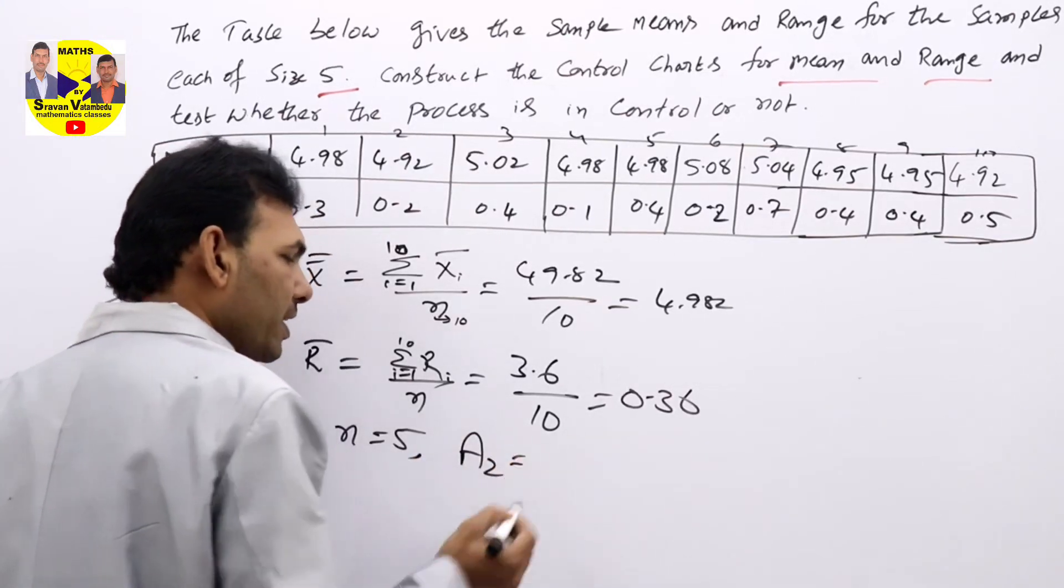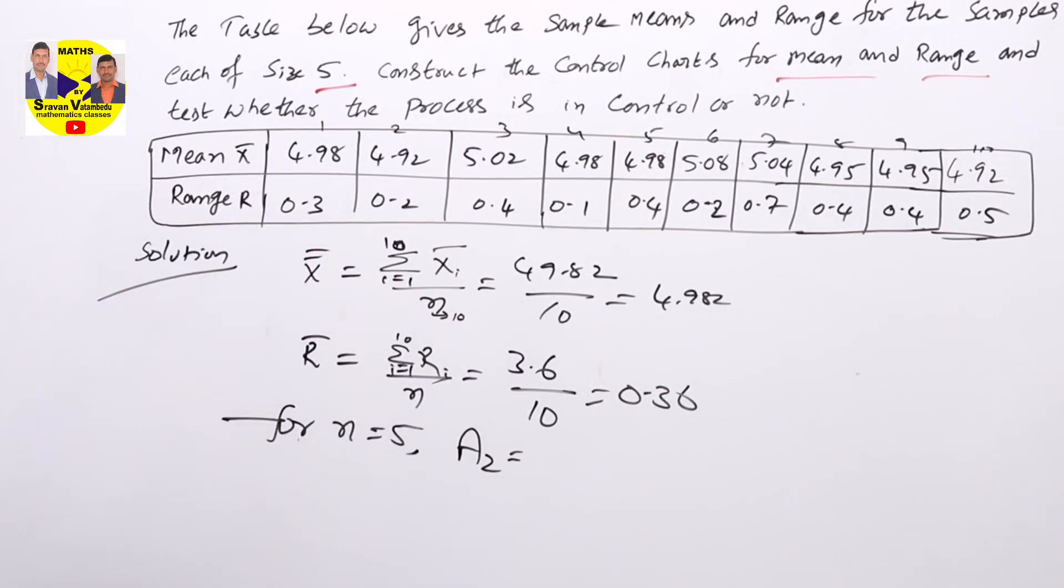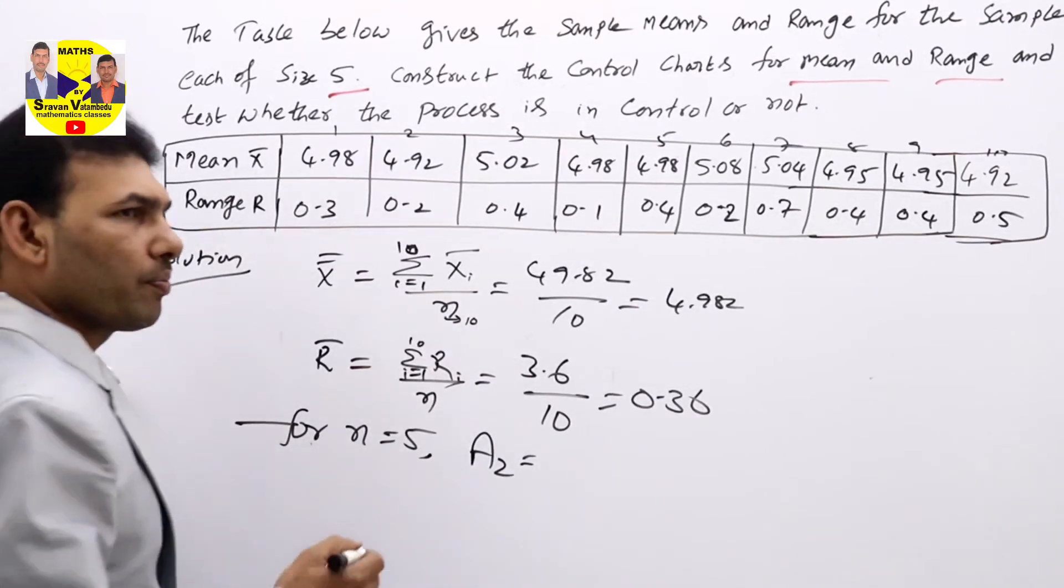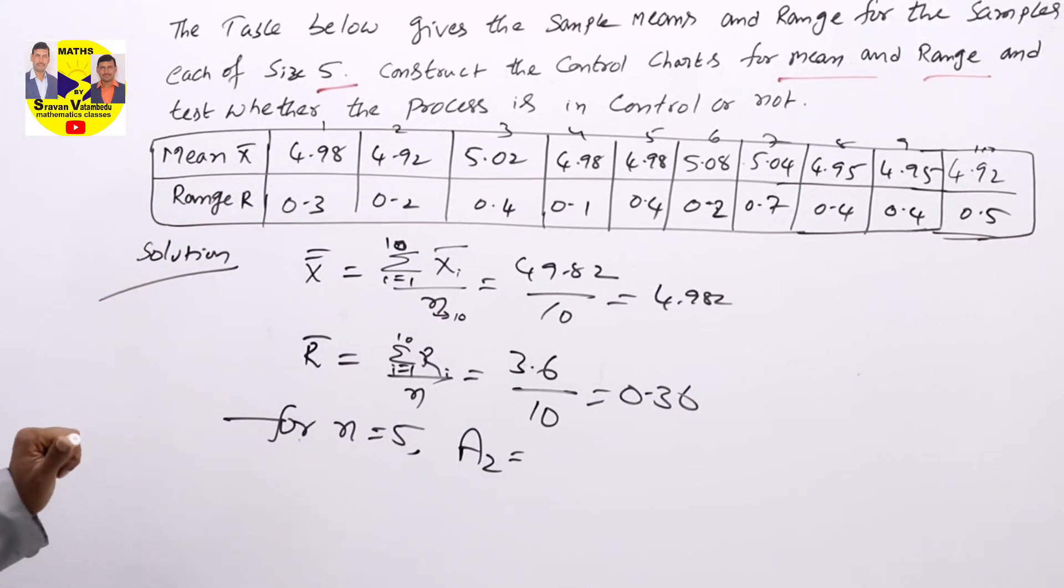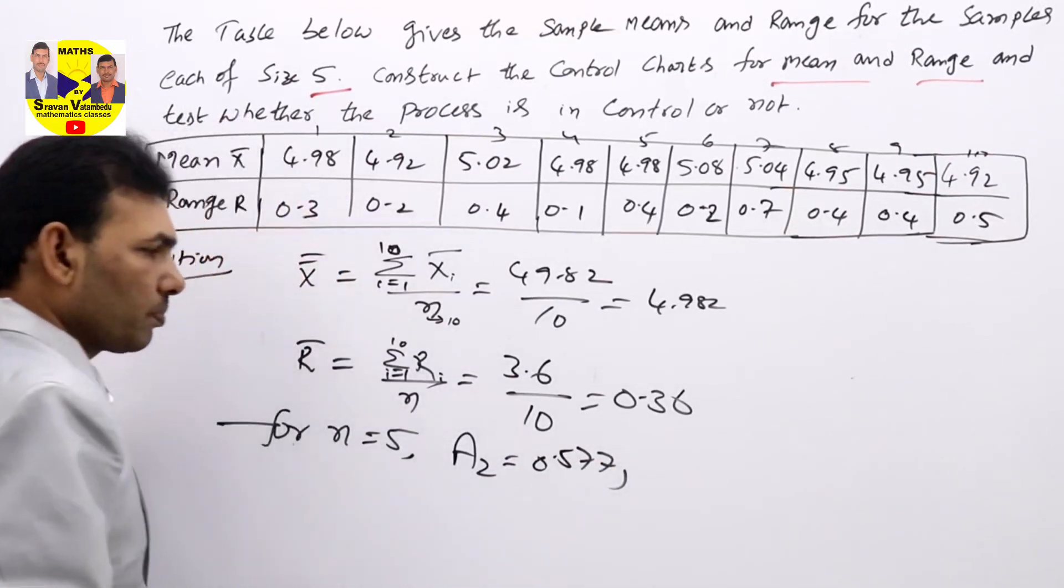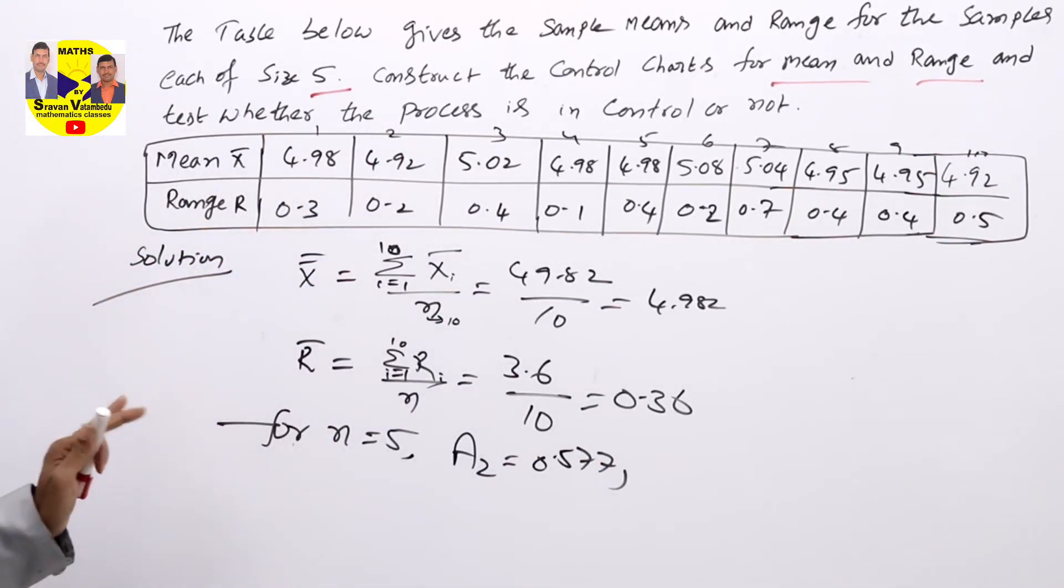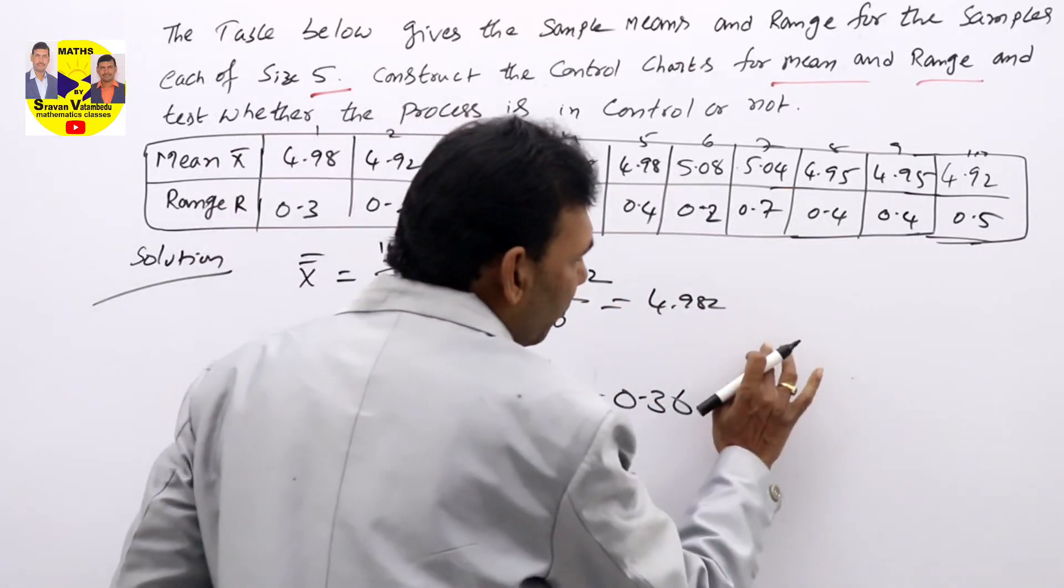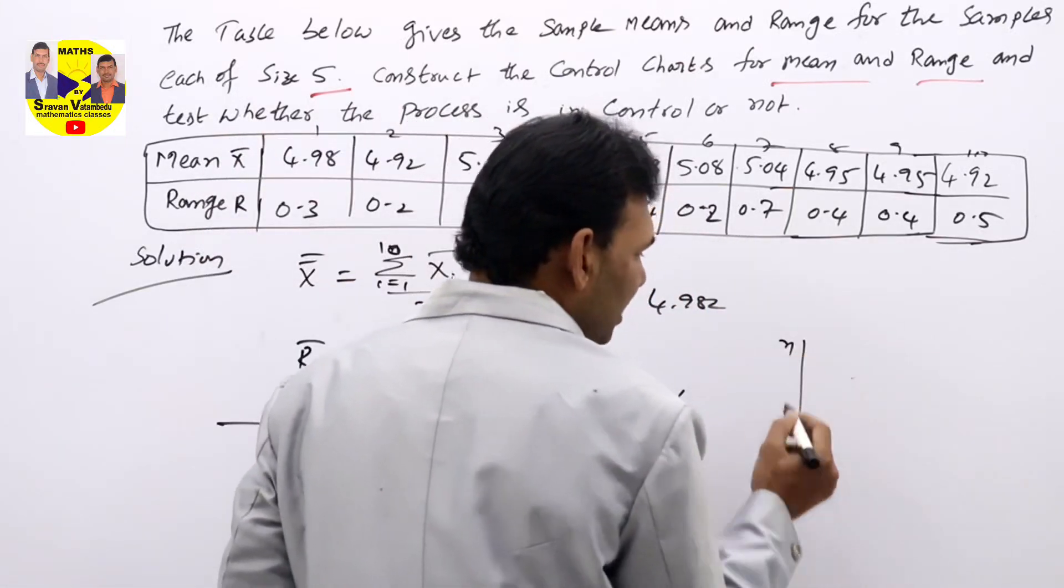This is for X bar chart—if needed, we can take. These are from control charts table. They are: A2 value 0.577. The required values we will take.